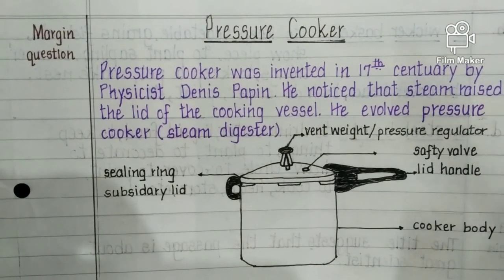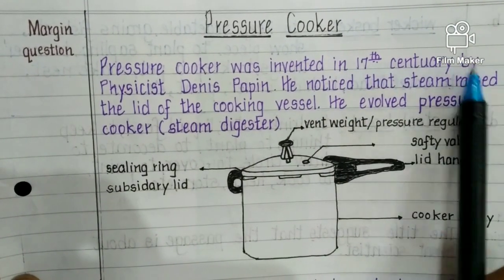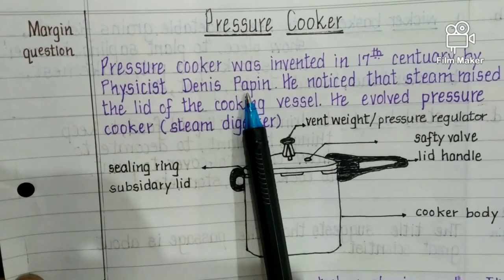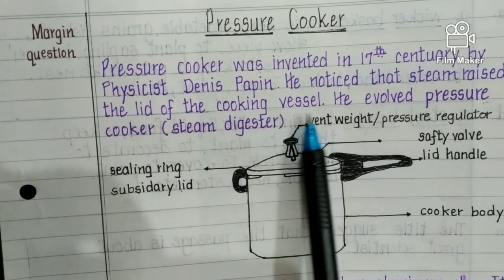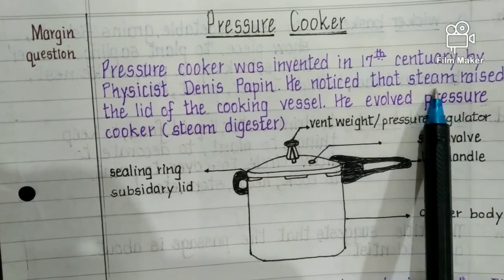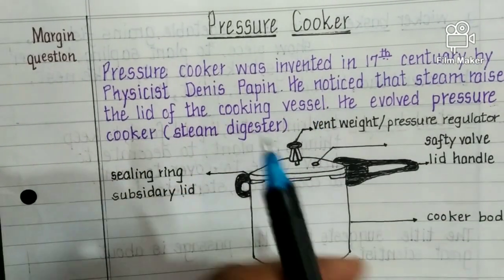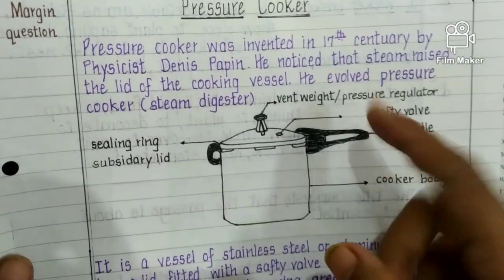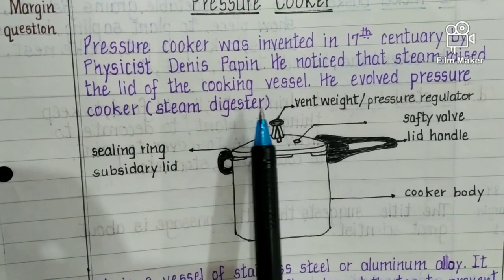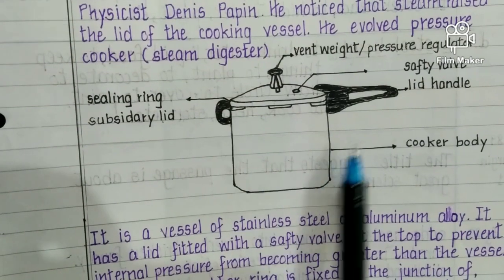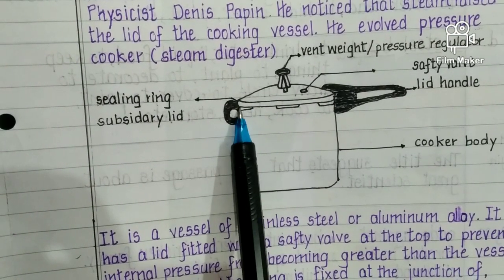The pressure cooker is also a kind of machine we use in our day-to-day life. It was invented in the 17th century by physicist Denis Papin. He noticed that steam raised the lid of the cooking vessel, showing that steam is very powerful. He developed the pressure cooker, which he originally named the 'steam digester.'